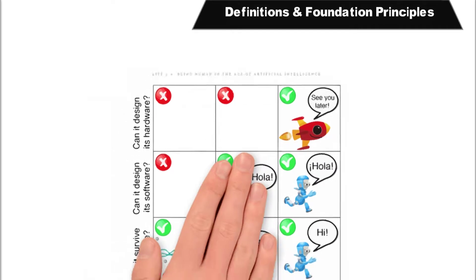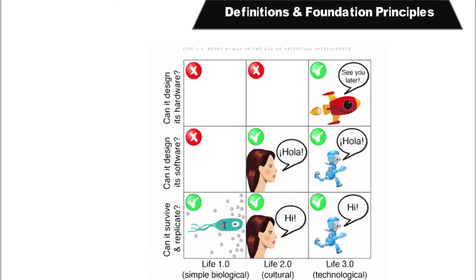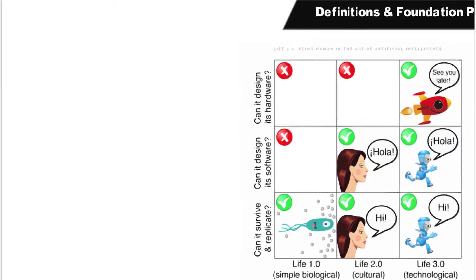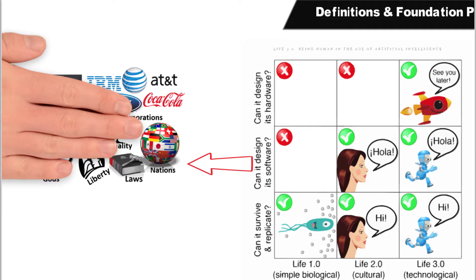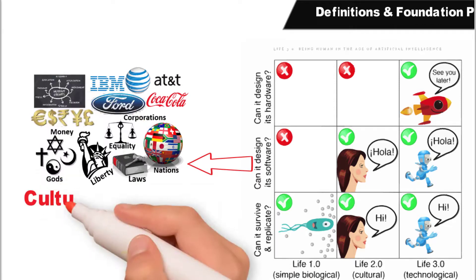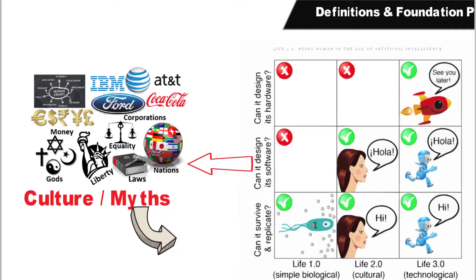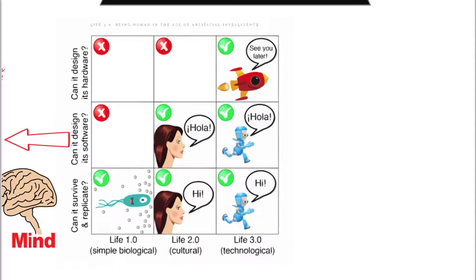We're going to start with the idea of definitions and foundation principles. The basic idea here is that he has Life 3.0 because Life 1.0 could replicate, Life 2.0 and 3.0 have the ability to design your own software where it is culture and myths. We have our cultures and myths which we use our mind to develop. So we have designed our own software there.